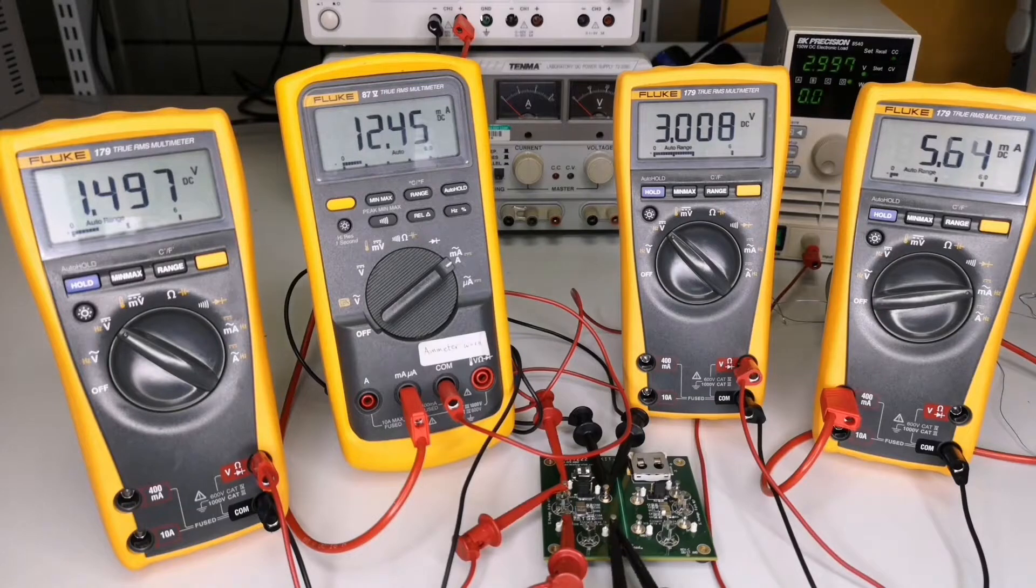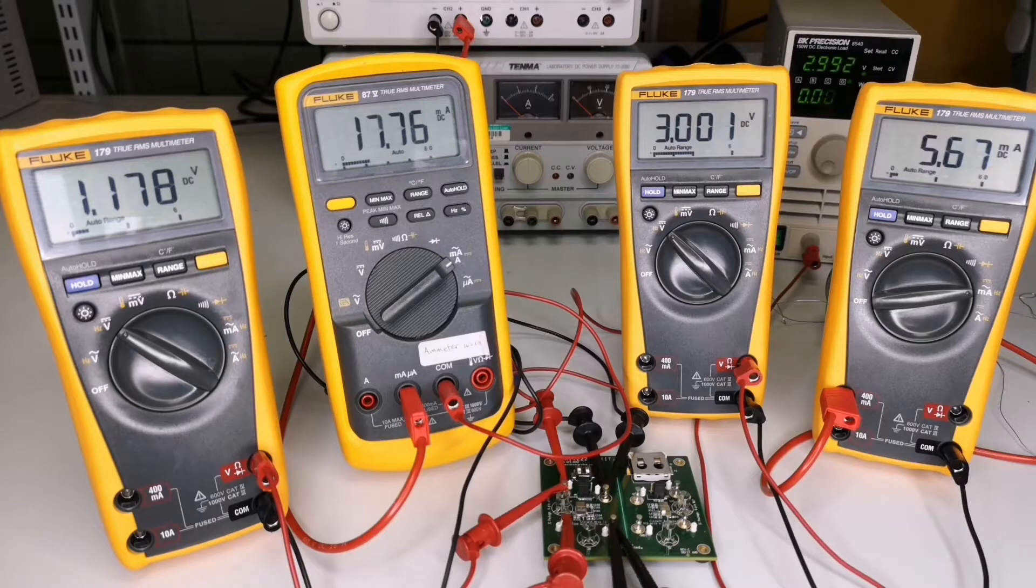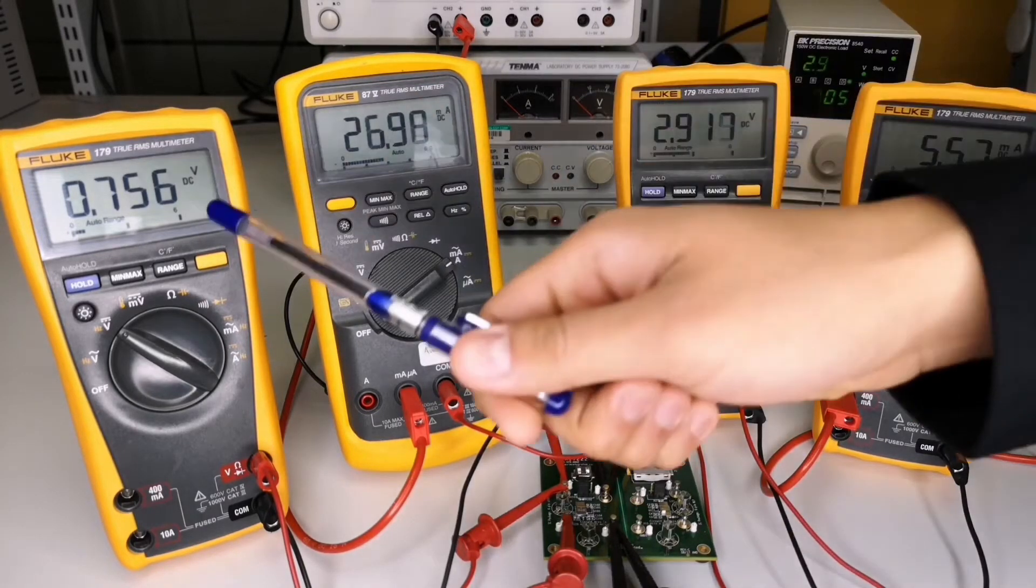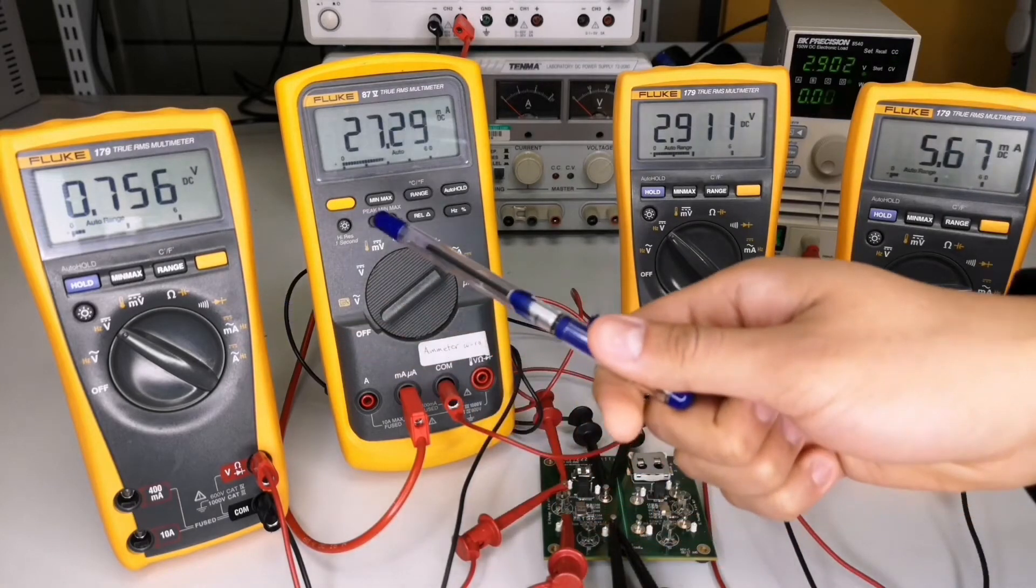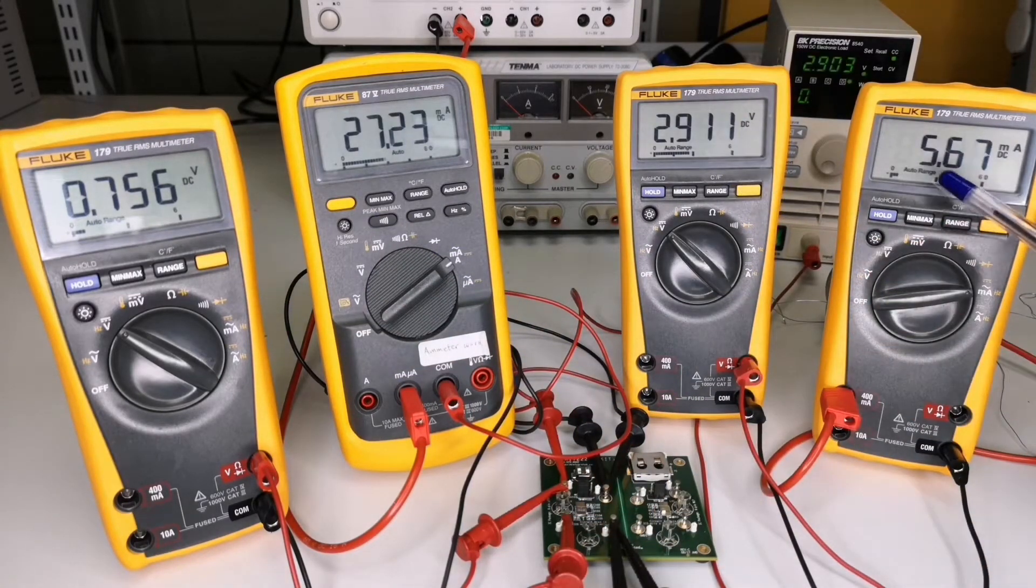Let's check the transient protection feature of the part by turning the input voltage down. You can see the part is still working for an input voltage below 0.8 volts, giving a steady output of 3 volts and an output current of 6 milli amperes.